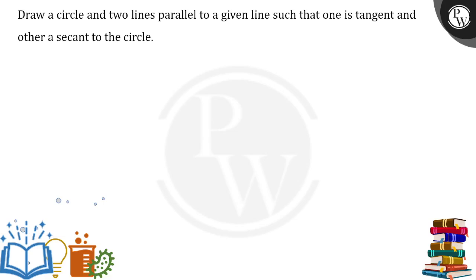Draw a circle and two lines parallel to a given line such that one is tangent and other is secant to the circle. They are asking you to first of all draw a circle. So, let us draw a circle.